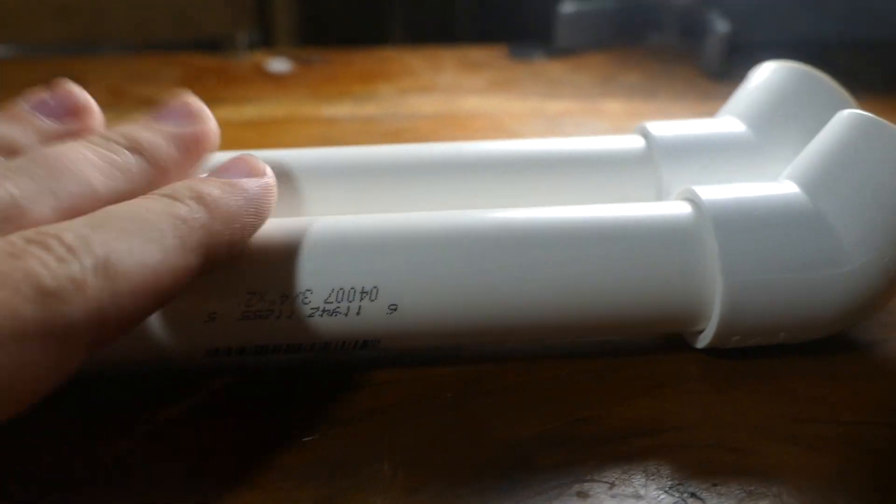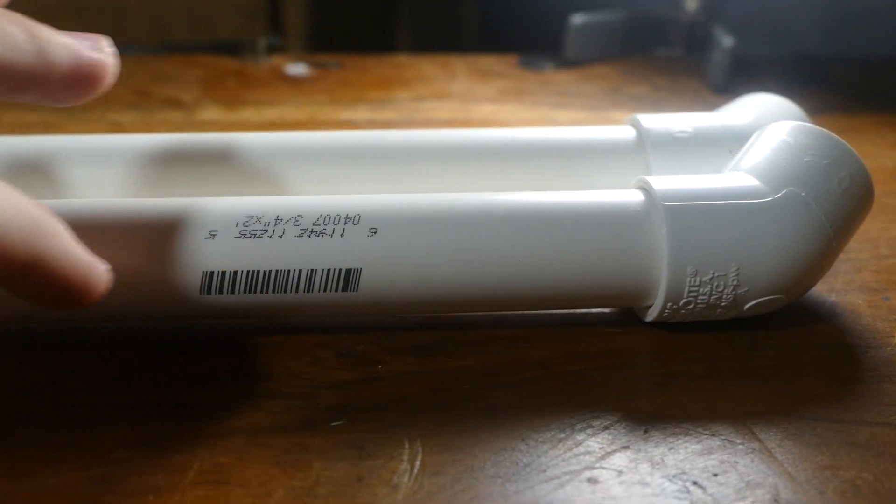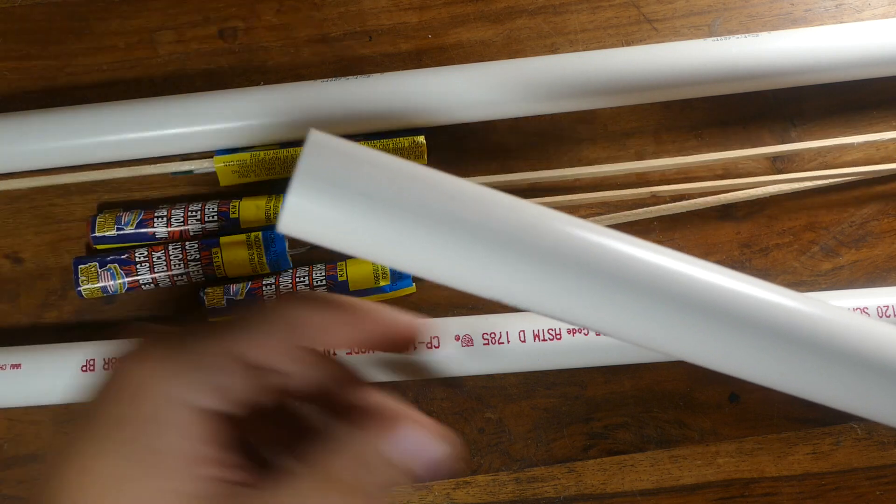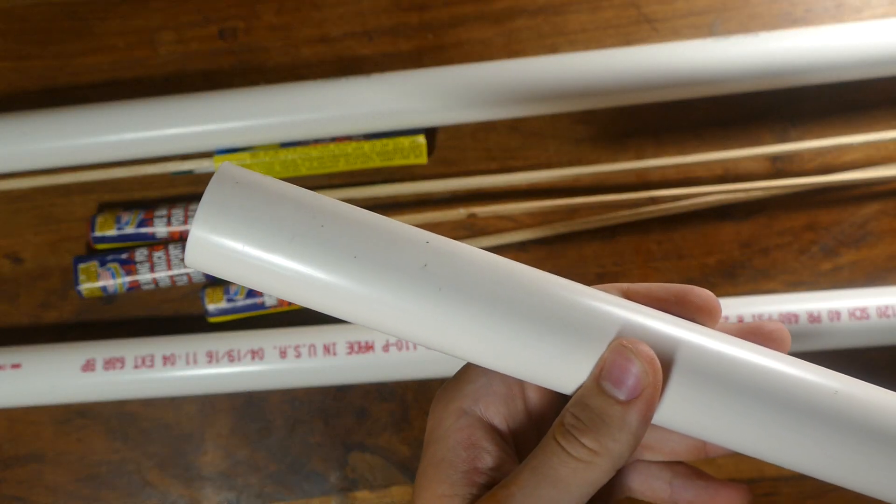But first, before we do any work with actually firing this, we have to figure out how I'm going to load it. So what I'm thinking is actually having a breech right about here. So I'm going to cut a hole and use this bigger piece of PVC to hopefully create like a sliding breech.